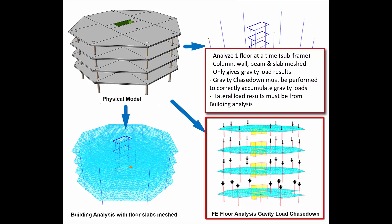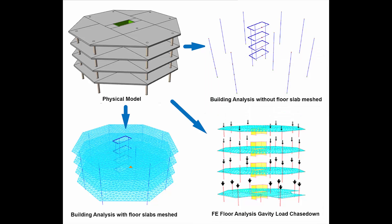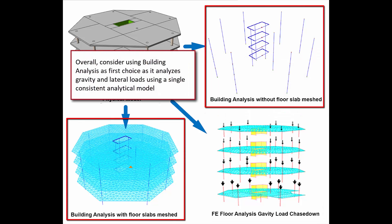Generally, FE floor analysis is more complicated and longer, and is usually used for specific reasons where sub-frame analysis is required or preferred. For example, FE floor analysis may be useful to analyze and design slabs by meshing one particular story, as slab design is usually designed only to gravity loads. Overall, we recommend you always use building analysis as the first preference, as it analyzes gravity and lateral loads using a single consistent analytical model.